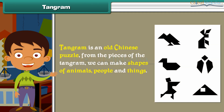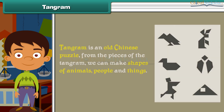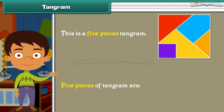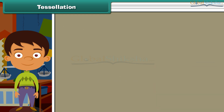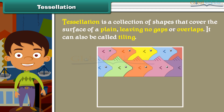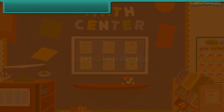Tangram is an old Chinese puzzle. From its pieces we can make shapes of animals, people, and things. Tessellation is a collection of shapes that cover the surface of a plane leaving no gaps or overlaps — it can also be called tiling.